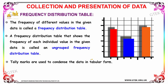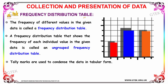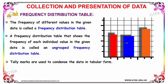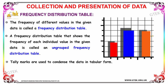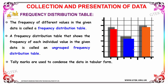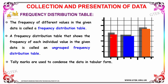Let's now discuss the frequency distribution table. A frequency distribution table shows the frequency of different values in the given data — specifically, the frequency of each individual value. This is called an ungrouped frequency distribution table. Tally marks are used to condense the data in tabular form.